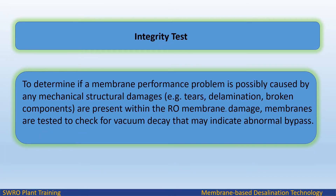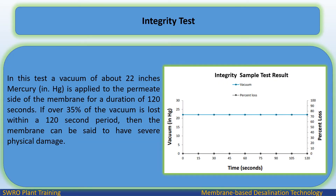Integrity test: This determines if a membrane performance problem is caused by mechanical structural damages such as tears, delamination, or broken components within the RO membrane. Membranes are tested for vacuum decay that may indicate abnormal bypass. A vacuum of about 22 inches mercury (in. Hg) is applied to the permeate side of the membrane for 120 seconds. If over 35% of the vacuum is lost within that 120-second period, the membrane can be said to have severe physical damage.